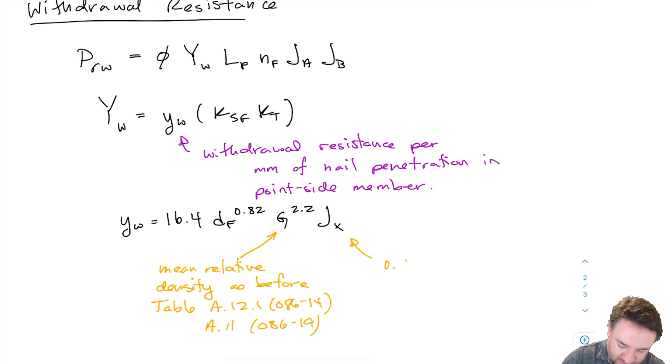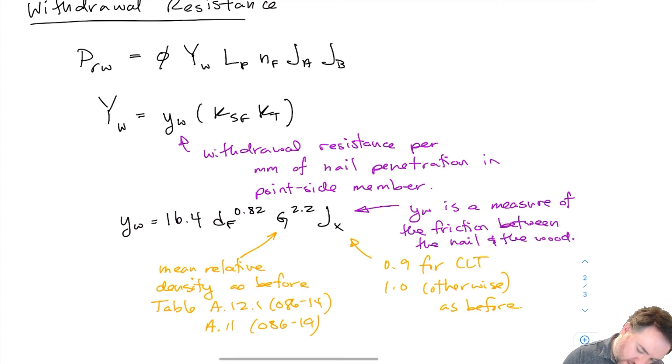So depending on what kind of wood my nail is embedded in I have a different mean oven dry relative density to use in this equation. My JX is also similar to before, 0.9 for CLT and 1.0 otherwise.